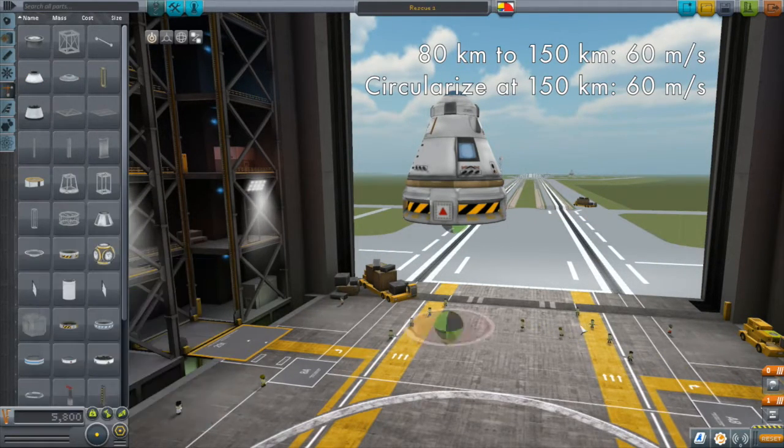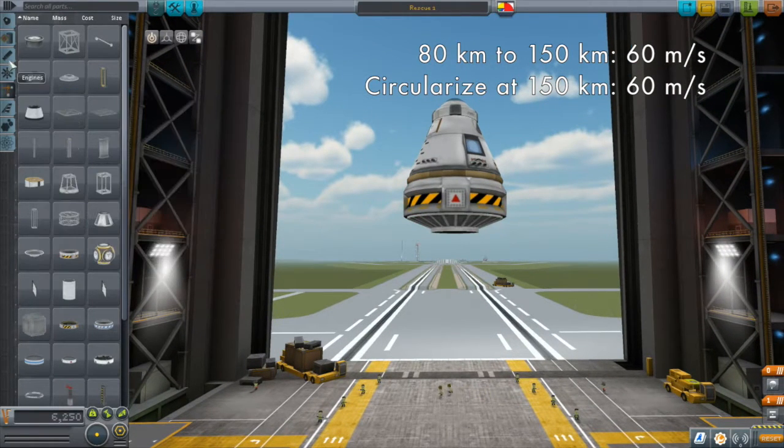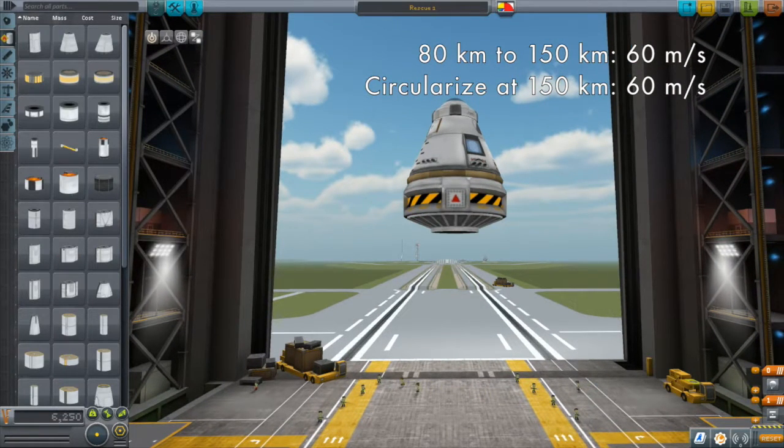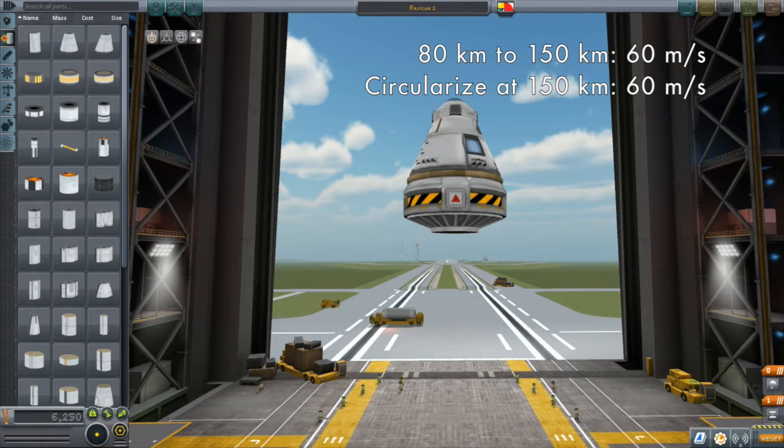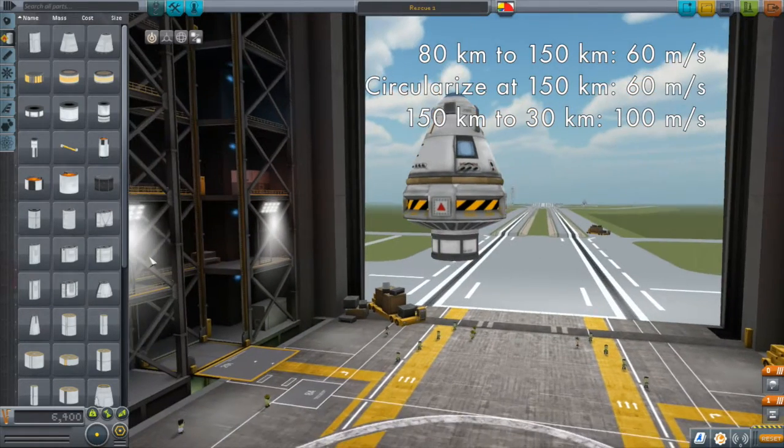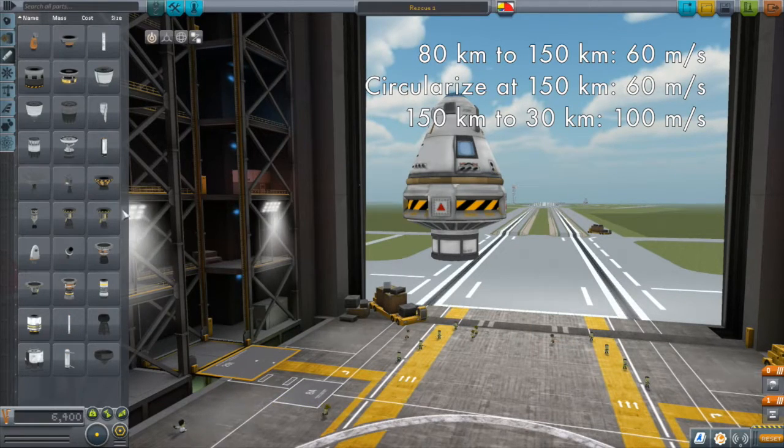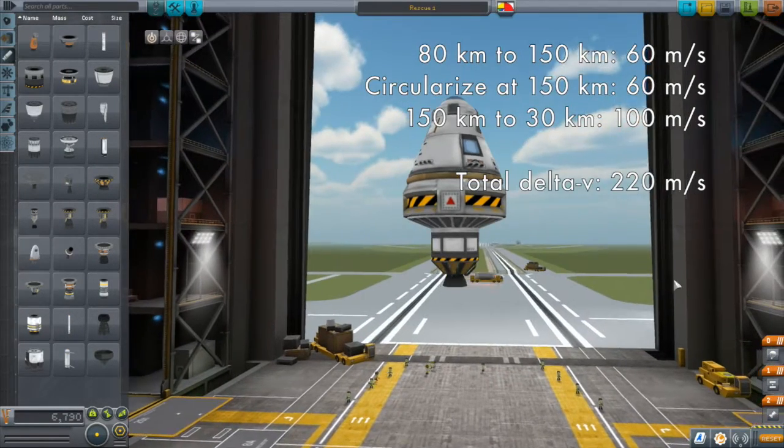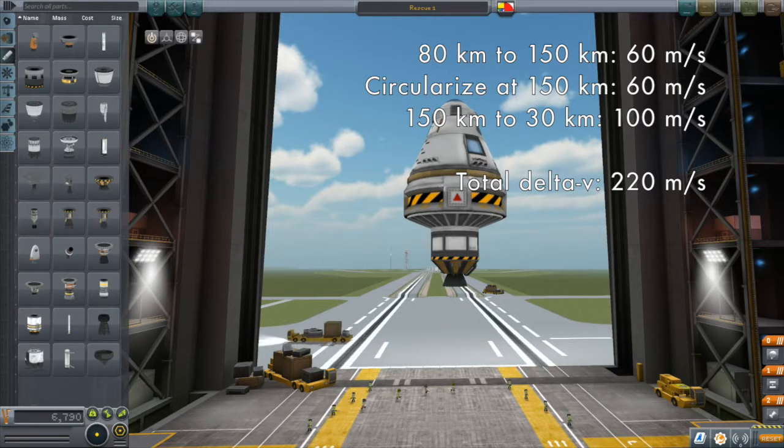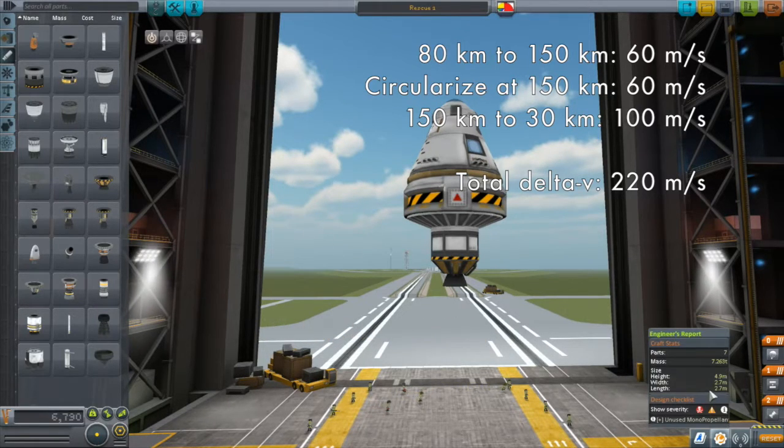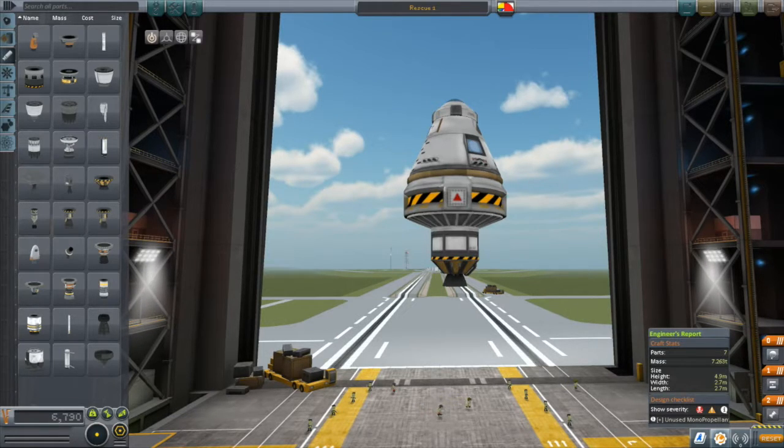And the burn to circularize at 150 kilometers will also be about 60 meters per second. Once we've rescued Bill, we'll need to get back down. And this will require another burn to bring our periapsis into the atmosphere. The transfer burn from 150 kilometers to 30 kilometers is about 100 meters per second. This adds up to a total delta-V requirement of 220 meters per second. In the second part of this episode, I'll go over how to calculate the delta-V available in any stage of a vehicle.